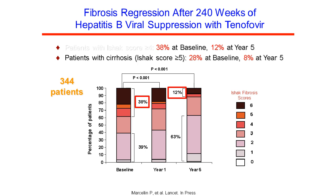The liver has an enormous capacity to resorb scar. A paper by Patrick Marcian and others showed that if patients with hepatitis B are effectively treated with the drug tenofovir, there's a remarkable regression of fibrosis. At baseline, 38% of patients had cirrhosis. Five years after successful chronic hepatitis B therapy, now only 12% of patients still have cirrhosis — speaking to the extraordinary regenerative capacity of the liver to not only reconstitute epithelial function but also degrade existing scar.